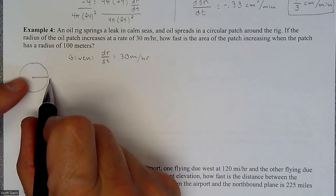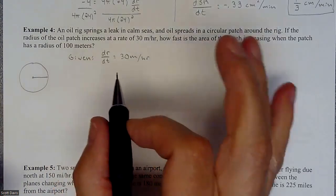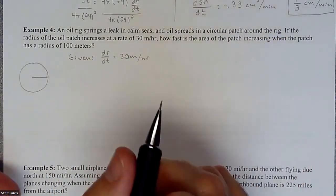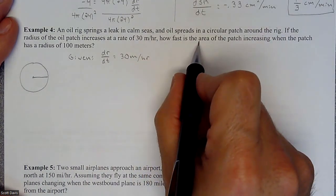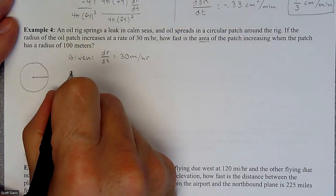If the radius is at a constant rate but you're creating an area that's getting bigger faster, what we're looking to find is how fast is the area changing. So that means we are finding dA/dt.